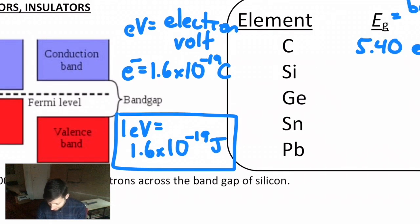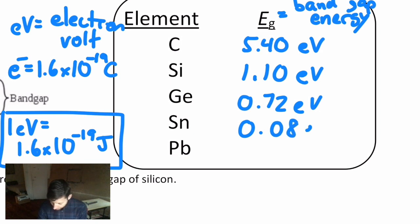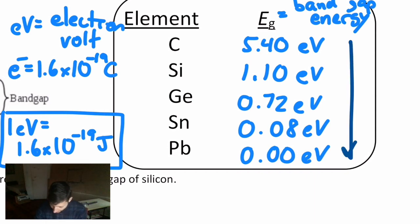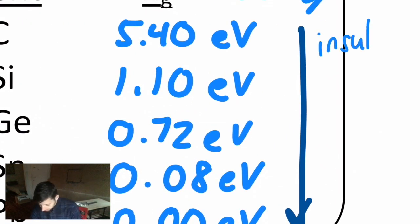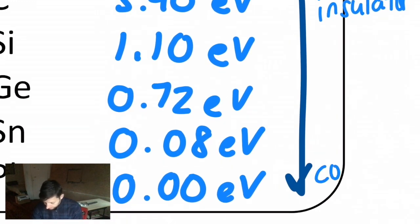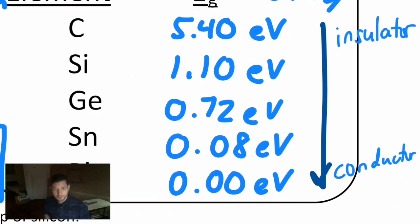Anyway, back to this table just to give you a sense. Carbon's is 5.4. Silicon's is much smaller. It's only 1.10 electron volts. Germanium's is 0.72. Tin's even smaller. And lead's is about zero. And that's really the point. As you go from a higher band gap energy to a lower band gap energy, you go from something that's essentially an insulator to something that's a conductor. So it depends on what the element is. Small band gap or zero band gap, electrons can promote very easily and you get conduction. You get mobility in the conduction band.